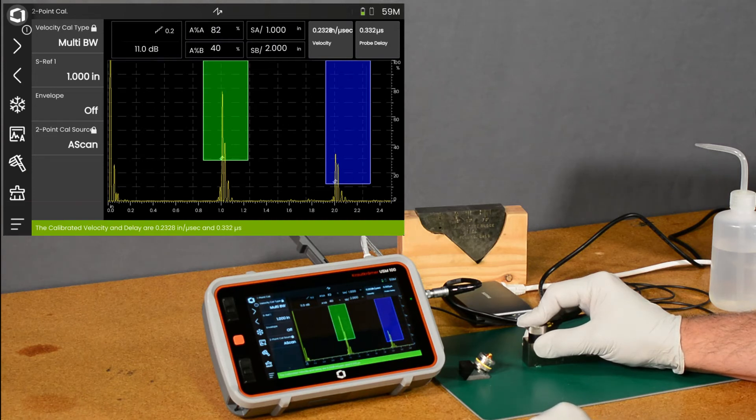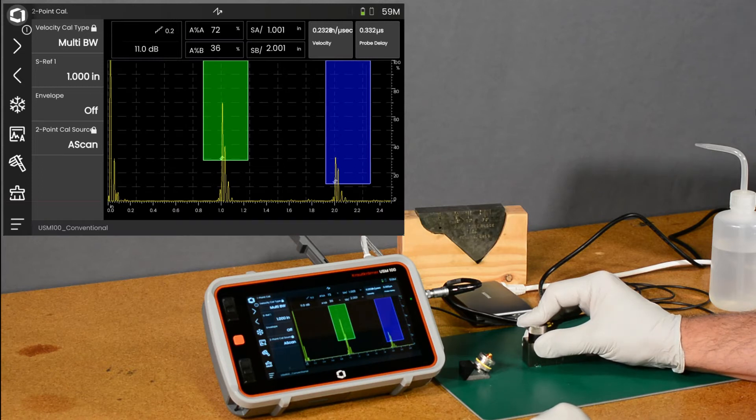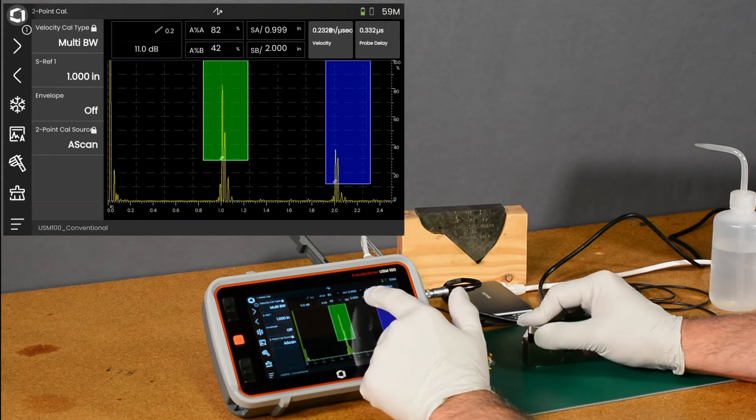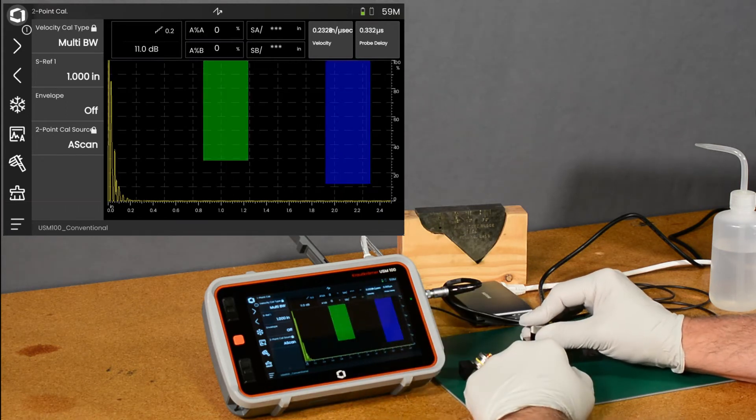and our calibration completes. And it looks like we measured 0.2328 inches per microsecond of velocity and 0.332 microseconds of delay. Notice our reading up here for sound path and gate A is rated at an inch,